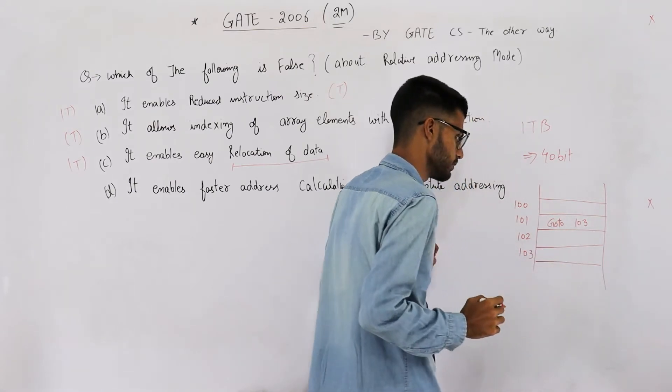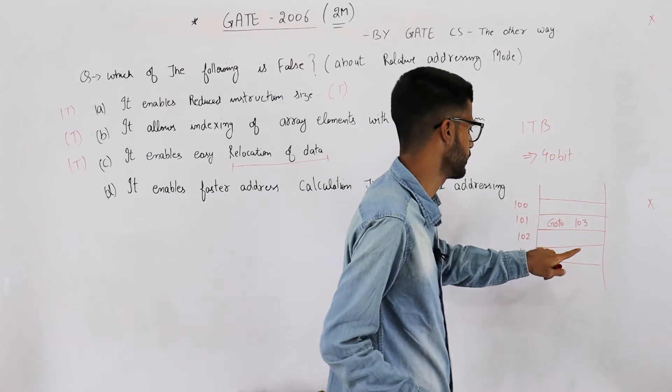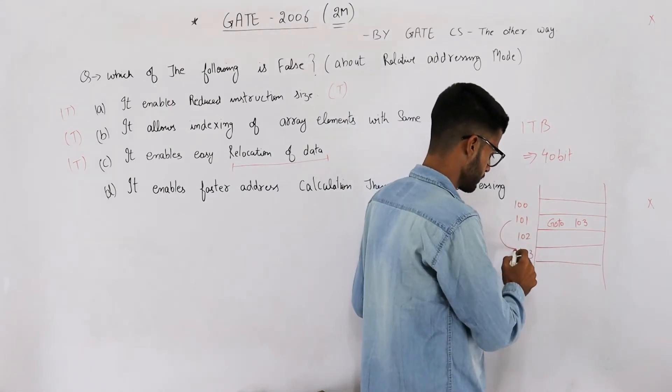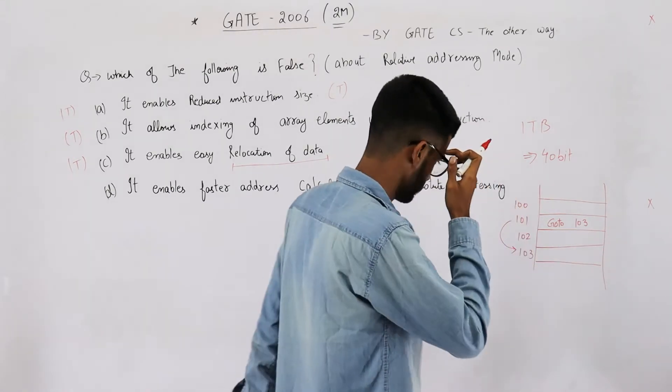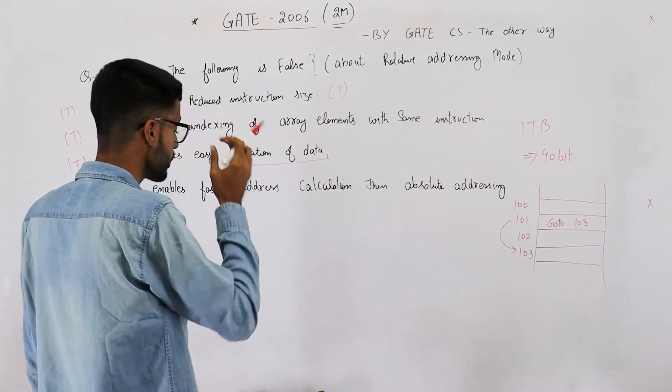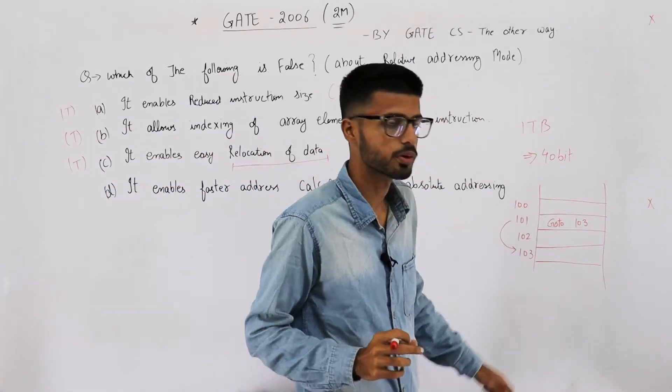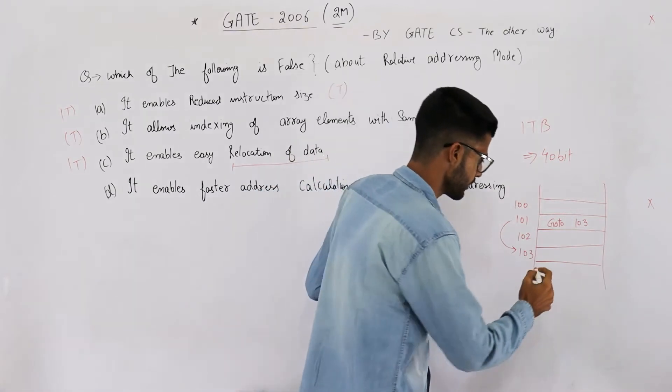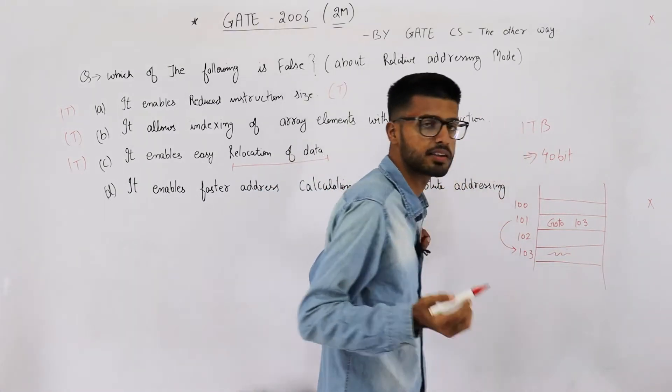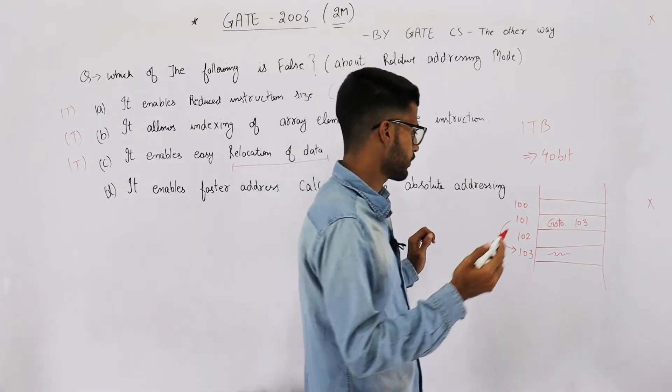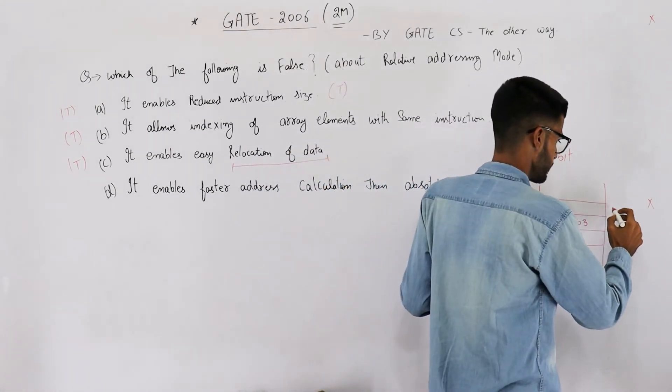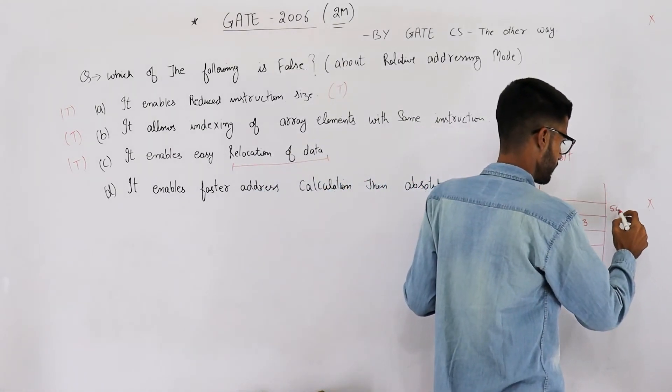That means you are trying to skip the second instruction and you are directly going to instruction number 103. But what if the operating system decides to shift this program somewhere else? Now this line is no longer line number 103. For example, your OS decides to put this on line number 500.